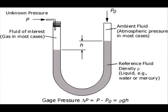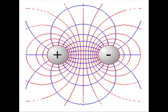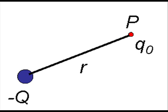The pressure of the water corresponds to the electric potential or voltage, the unit of measurement being the volt. The voltage is associated with the electric charge and the capacity C of a conductor by the following relation. In the space which surrounds an electrically charged body, an electric potential occurs which is proportional to the charge Q and inversely proportional to the distance R from the center of the body.